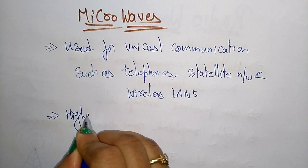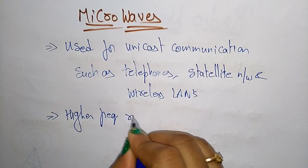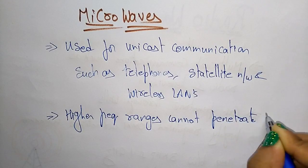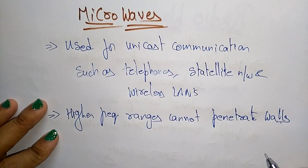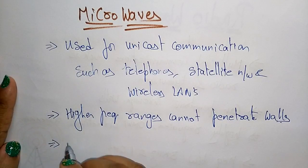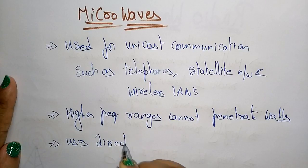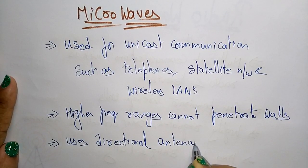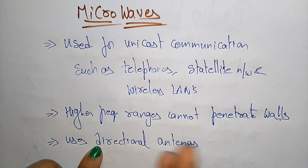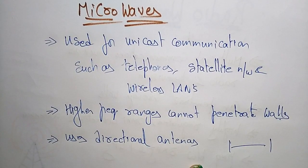For microwaves, higher frequency ranges cannot penetrate walls. Whereas radio waves use omnidirectional antennas, microwaves use only directional antennas. This means point-to-point, line-of-sight communication — the transmitter and receiver must be aligned with each other.